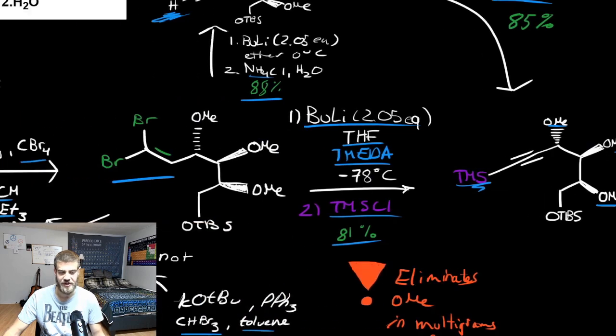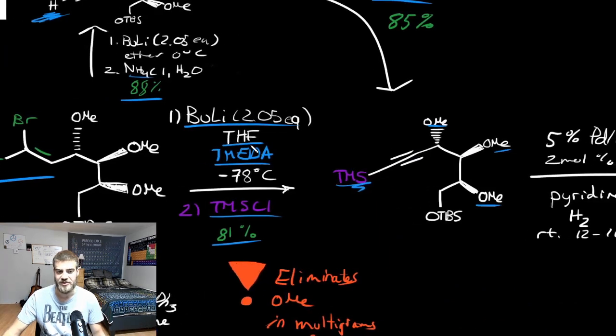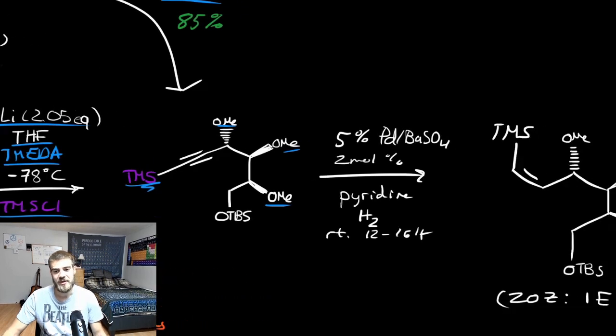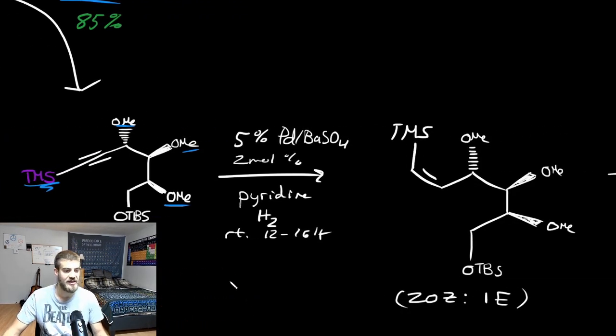All right, so overall, that's it for Corey-Fuchs reaction. They did the first step, they got their dibromo alkyne, and then they ended up doing the second part of their Corey-Fuchs reaction in two separate parts, to also include their protected alkyne. And afterwards, let's just quickly go through what they did with this.